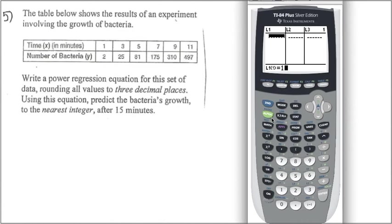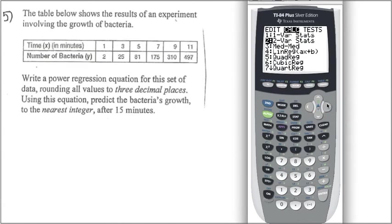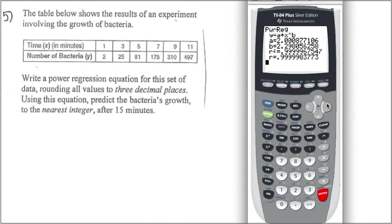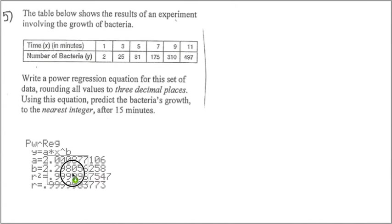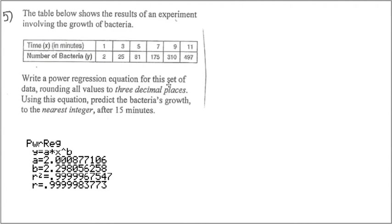So 1, 3, 5, 7, 9, 11. 2, 25, 81, 175, 310, 497. A power regression equation, then we have to go for the stat, calc. Then, here, we end up getting to the 3 decimal places. So, here we have y equals a is equal to 2.001, and then x to the b power, which is 2.298.